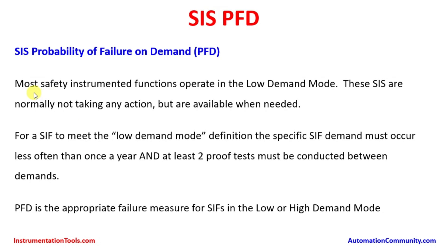Most safety instrumented functions operate in low demand mode. Generally, process plants operate on a low demand mode as far as the SIS is concerned. These SIS are normally not taking any action but are available when needed. The safety instrumented system is always active but components are not moving every time. They are like a passive system and they operate whenever there is any demand or hazardous event happening in the plant. At that time, the sensor does sensing of the process parameter measurement, the logic solver makes logical calculations and provides an output to the safety instrument system — for example, for valves — and then operates. They are always available but keep silent.